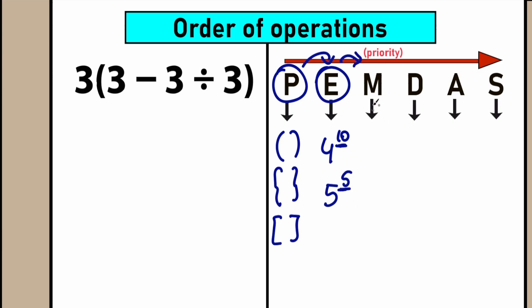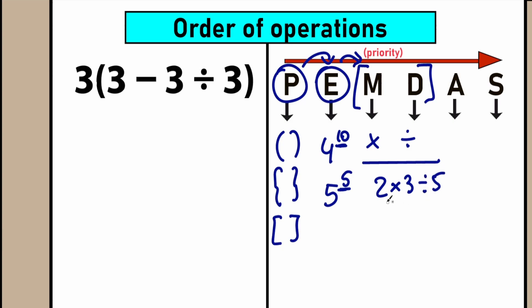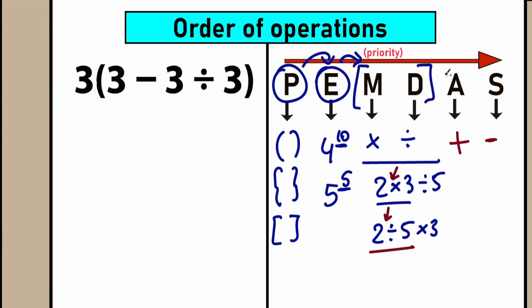The next step is the Multiplication and Division group — M stands for Multiplication, D stands for Division. We need to evaluate expressions with multiplication and division signs. These two are tied for priority: whenever we have something like 2 times 3 divided by 5, we perform multiplication first because it comes first from left to right. And when we have 2 divided by 5 times 3, we do division first. In conclusion, A stands for Addition and S stands for Subtraction. So that was a quick introduction to the PEMDAS order of operations.